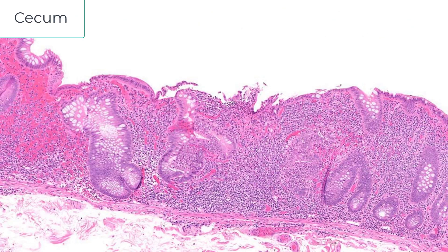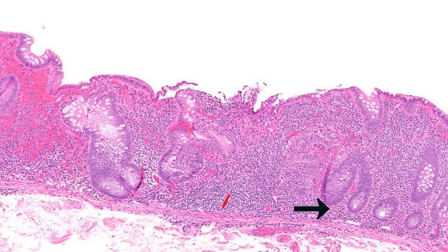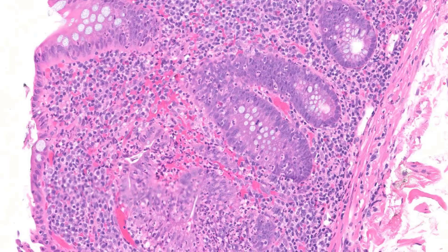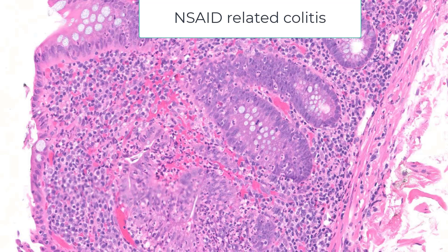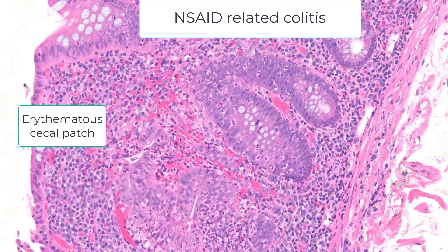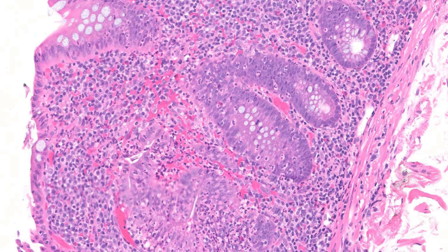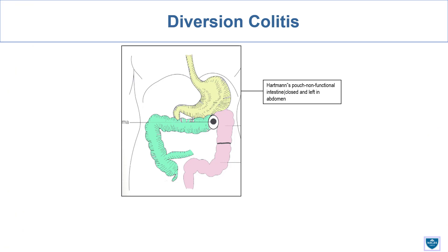This example is from the cecum of a completely asymptomatic patient. It does look like chronic colitis — basal plasmacytosis, even a branch, some variation in crypt size, a huge expansion of the lamina propria — but this is not inflammatory bowel disease. This is NSAID-related colitis. Remove the NSAIDs and this picture of active chronic colitis essentially returns to normal. The hint for drug-induced NSAID-related colitis is that these patients are asymptomatic, with erythematous lesions identified during a screening colonoscopy. The overwhelming majority of patients with IBD have symptoms, specifically diarrhea.